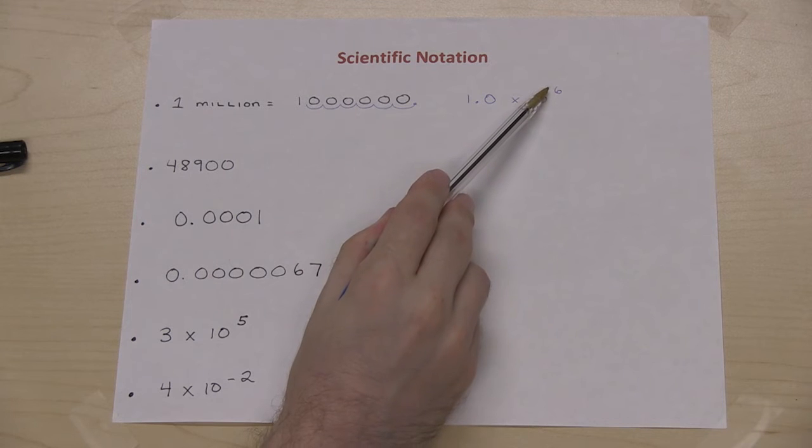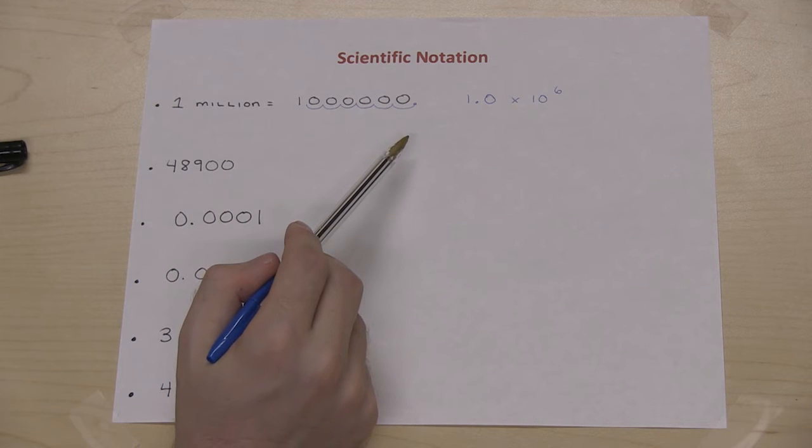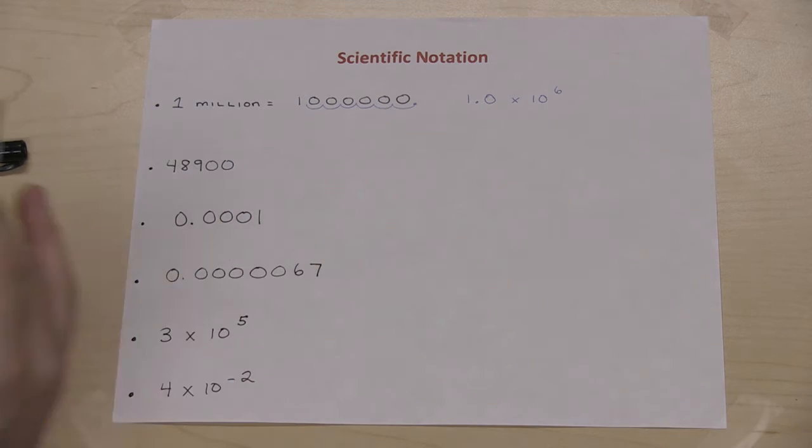The 6 has a positive to it because the number is bigger than 1. If the number was less than 1, then I would have a negative exponent. Let's try a second example.